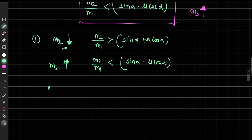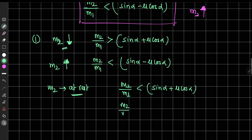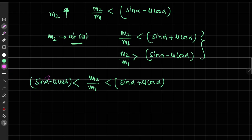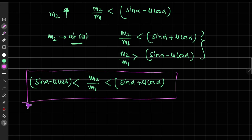For the rest condition of m2, we write both conditions simultaneously: m2 upon m1 should be less than sin alpha plus mu cos alpha and greater than sin alpha minus mu cos alpha. This gives us a range for the ratio m2 upon m1 in which m2 will remain at rest.